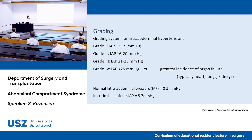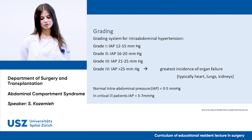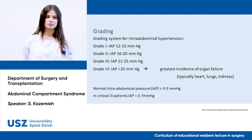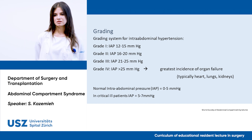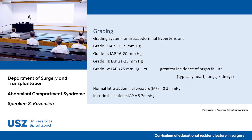There are different grading systems for intra-abdominal hypertension. Grade one is 12 to 15 mmHg, grade two 16 to 20, grade three 21 to 25, and grade four is over 25 mmHg. Grade four has the greatest incidence of organ failure, typically affecting heart, lungs, and kidneys. Normal intra-abdominal pressure is about 0 to 5 mmHg; in critically ill patients it's elevated to 5 to 7 mmHg. In obese patients it can be 12 to over 14 mmHg, and it is also physiologically increased in pregnant women.